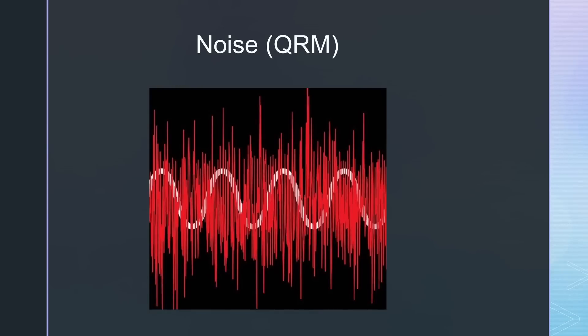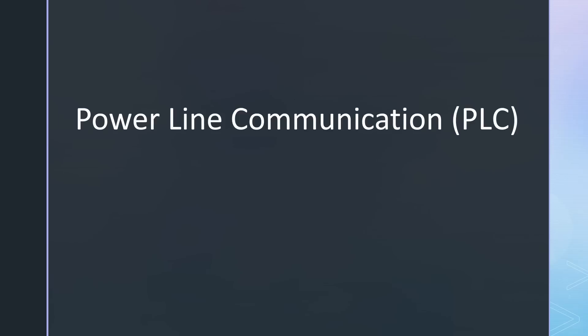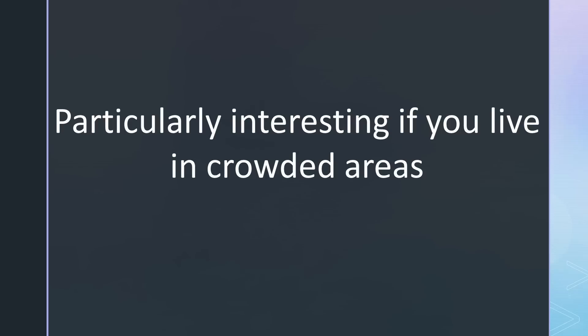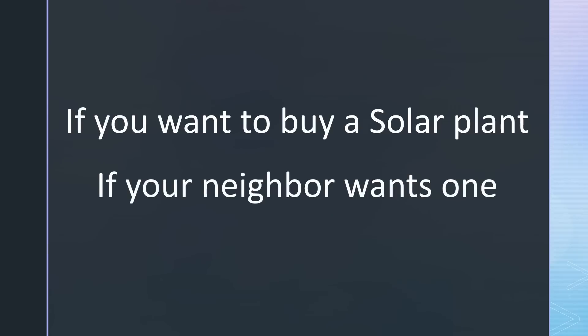Radio frequency interferences, also known as QRM, have become a significant issue in modern times. Today, I will present a structured approach to tackle this problem and include interferences of powerline communication devices and solar optimizers. This video will provide valuable insights for individuals residing in regions where modern technology is prevalent, and will also prove useful for those considering the installation of a solar power plant or for individuals living close to such facilities.